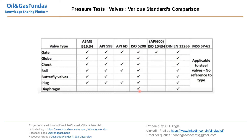ISO 5208 states the shell pressure test is required for all valves. API 600 covers gate valves only. As per DIN 12266, it is required for all valves. MSS SP 61 is applicable to steel valves with no reference to other types. This is a comparison about valve inspection and testing related to the clauses given in these standards, specifically regarding the shell pressure test.